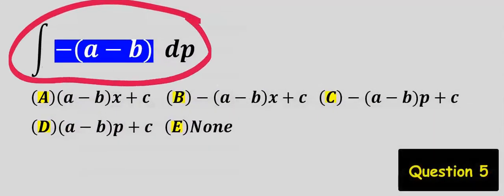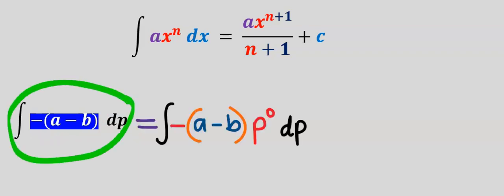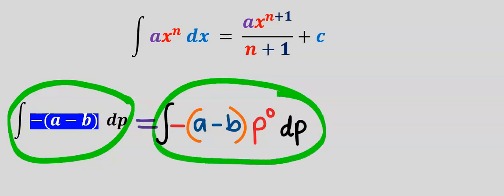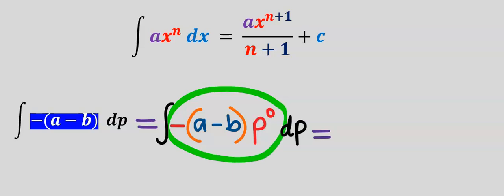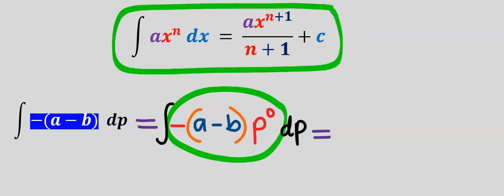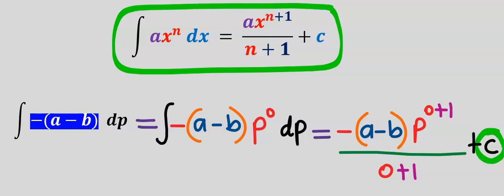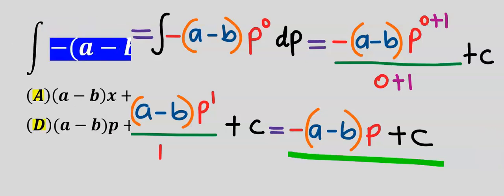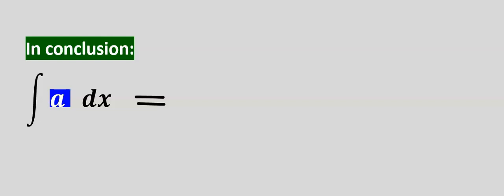Next, let's integrate this function. We are integrating this constant with respect to p. I will rewrite this for the integration — because it is dp, I add an increment to p and not x. Applying the formula, we add the increment to p and bring it down to the denominator, then add the constant. This is our answer, and our answer is c. In conclusion, whenever you integrate a constant you return that constant, add x to it, and plus c.